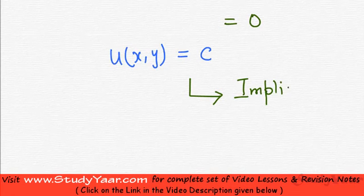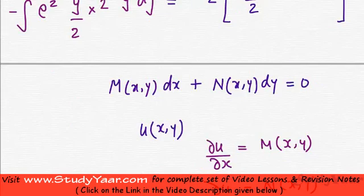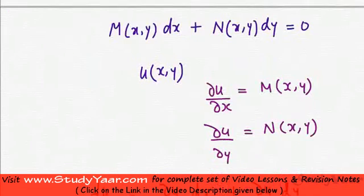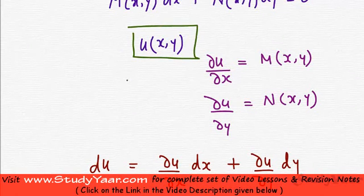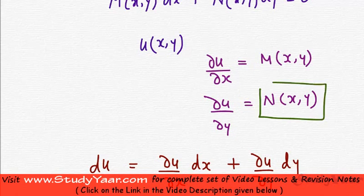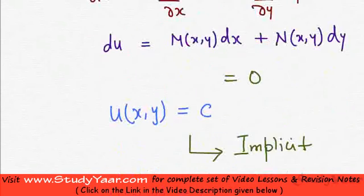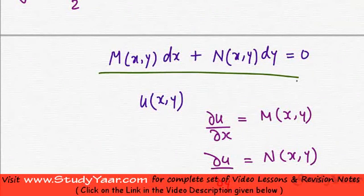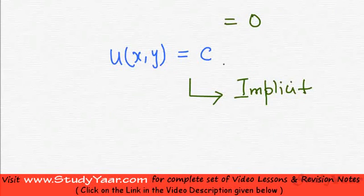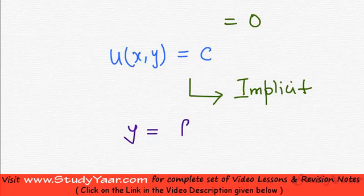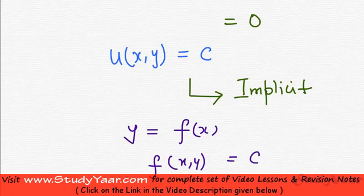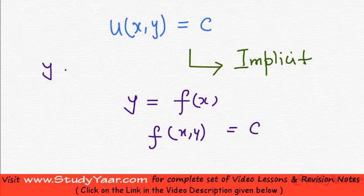This is an implicit solution of the differential equation. We assumed a function u whose partial derivatives with respect to x and y are M and N respectively. If that is the case, then u = constant is the solution. We call it an implicit solution because we are not getting y as an explicit function of x; rather, we have f(x,y) = constant.